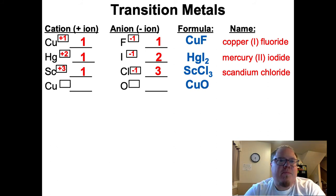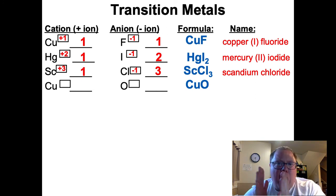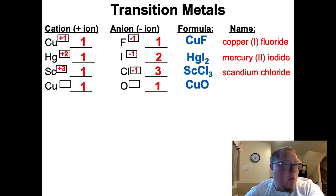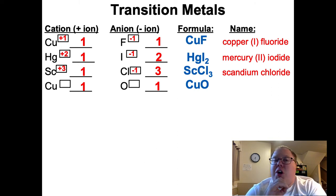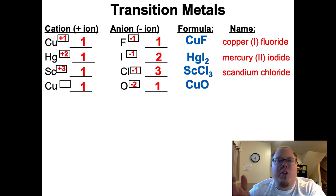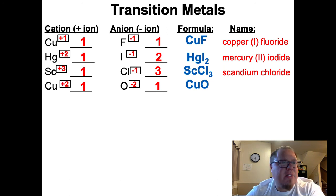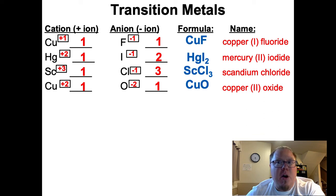Next example: copper and oxygen - CuO. So we've got a copper oxide, but what's the Roman numeral? It is a 1 to 1 ratio based on that formula. The charge on oxygen is typically negative 2. Since it's 1 to 1, the charge on copper has to match that except be positive - so it has to be a positive 2 charged copper. This would be copper 2 oxide.